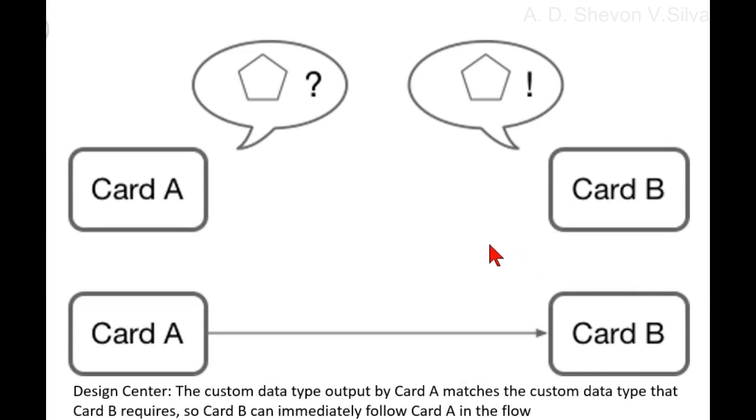Here you can see the custom data type output by card A matches the custom data type that card B requires. So card B can immediately follow card A in the flow.